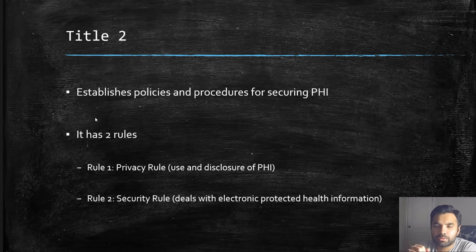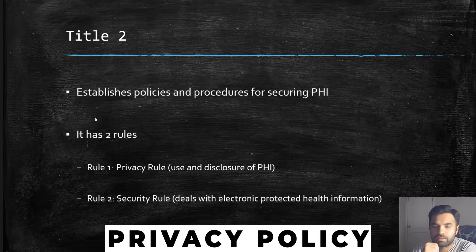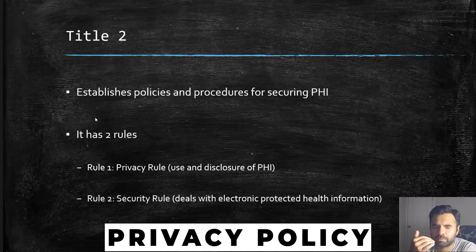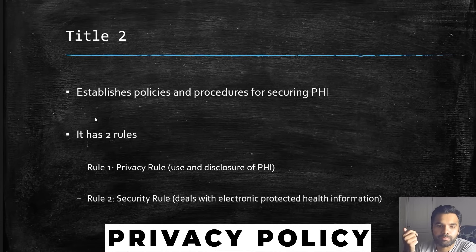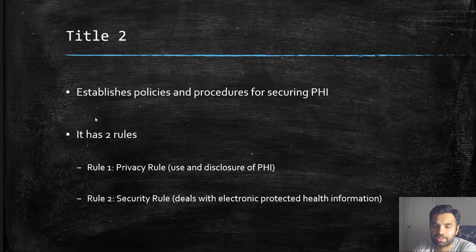Title Two has two rules. The first is the Privacy Rule, which governs the use and disclosure of PHI. Most websites nowadays have a privacy policy. The second rule is the Security Rule, which is more applicable to us in information security — it deals with electronic protected health information, also called ePHI.